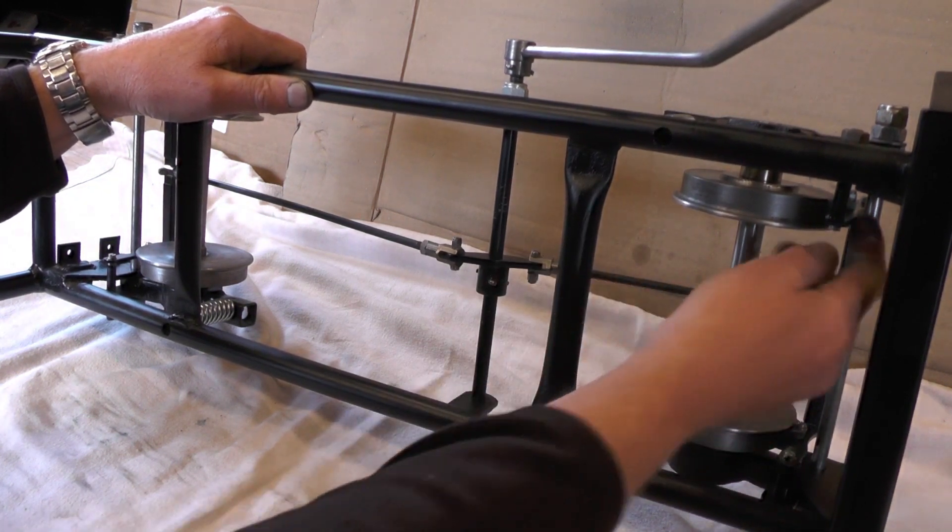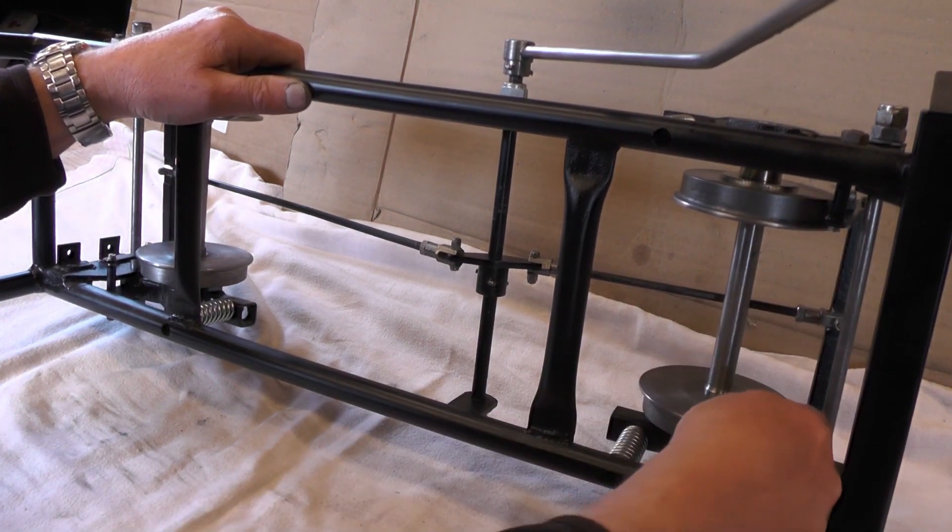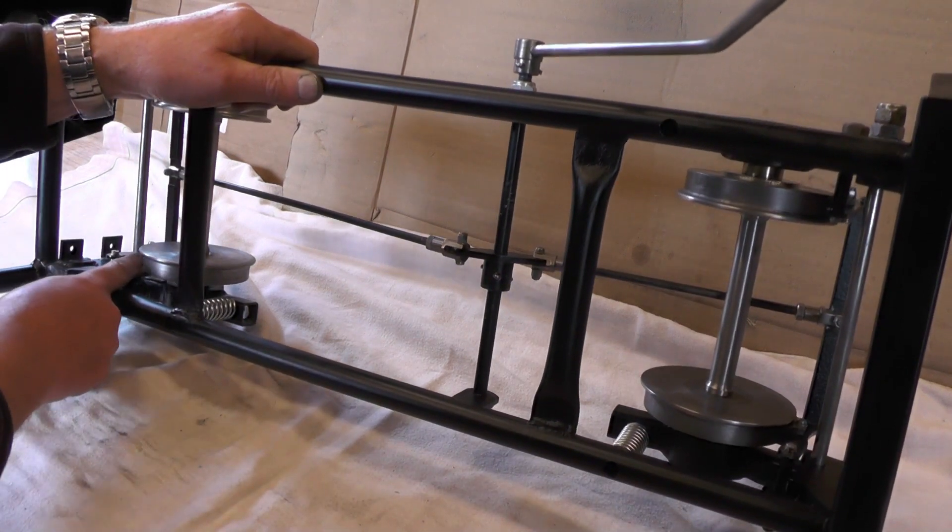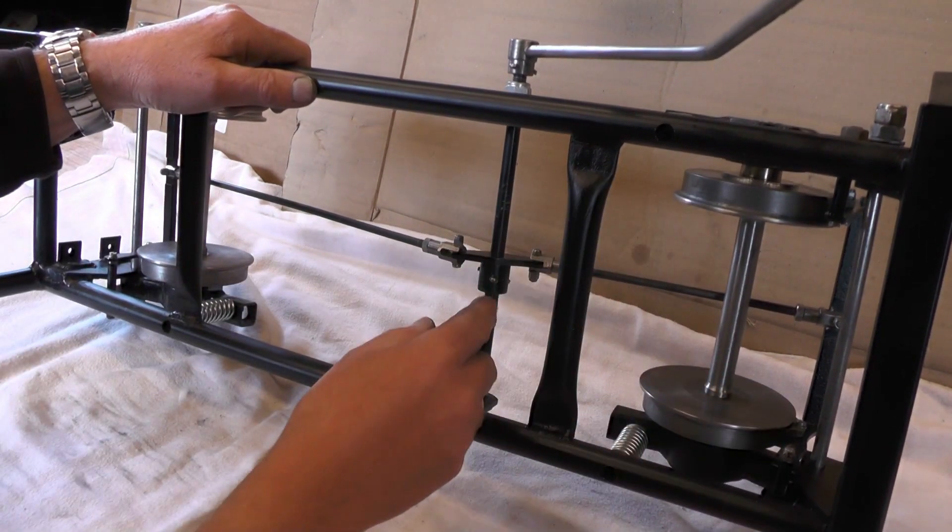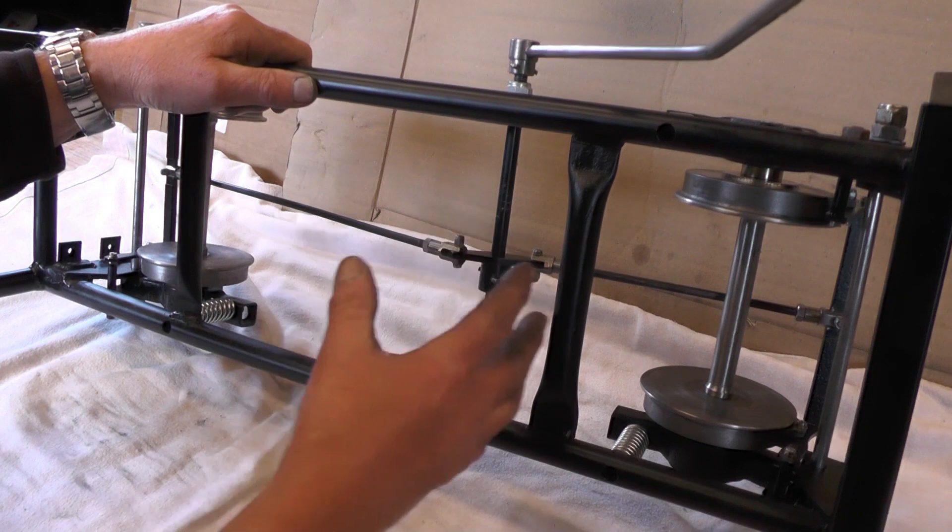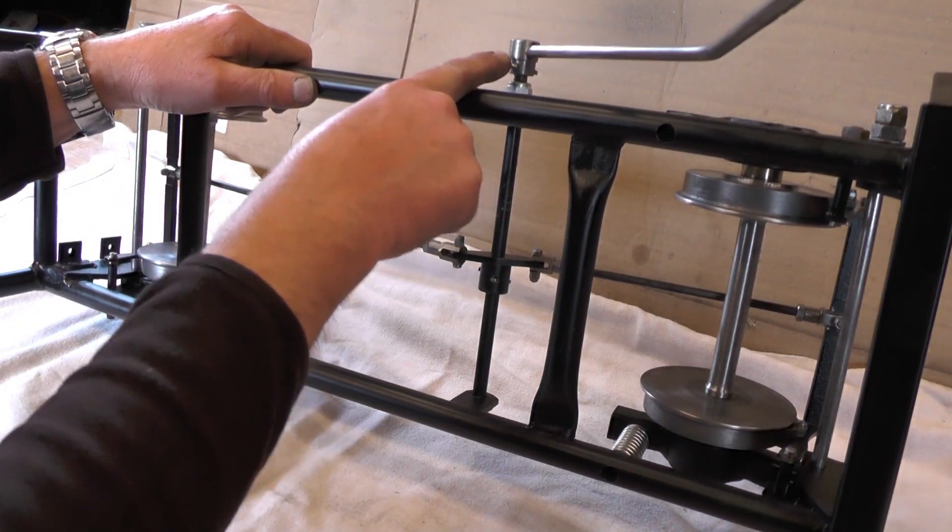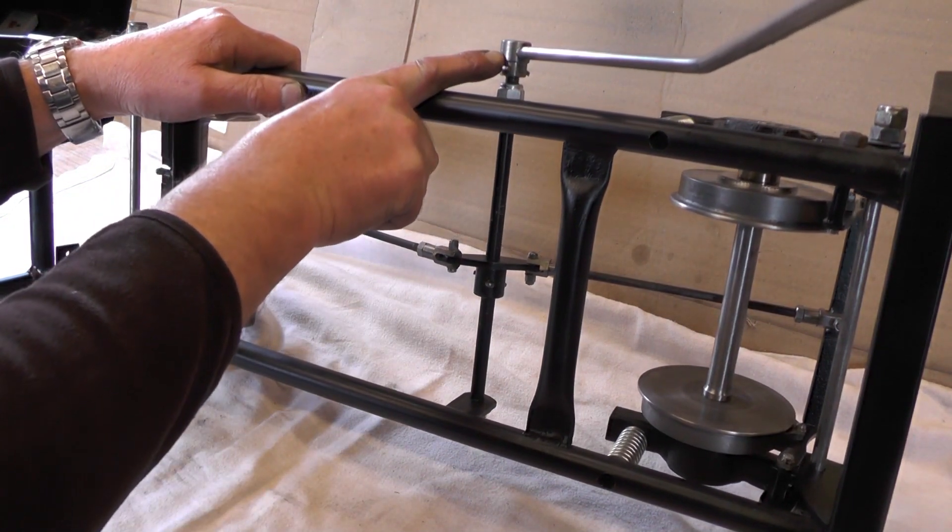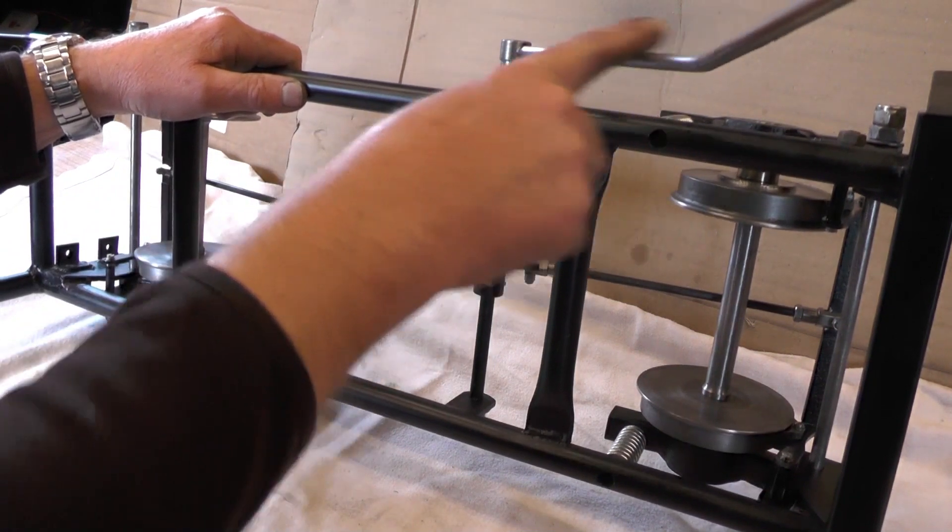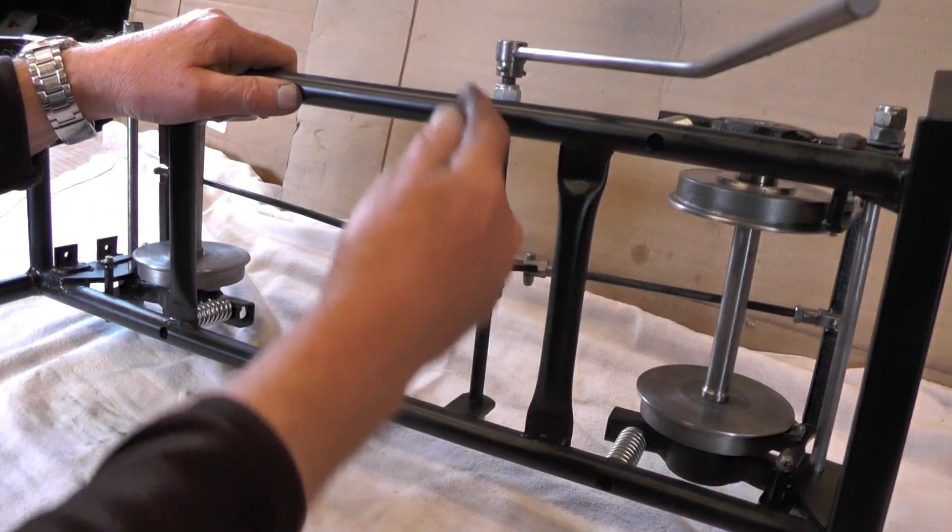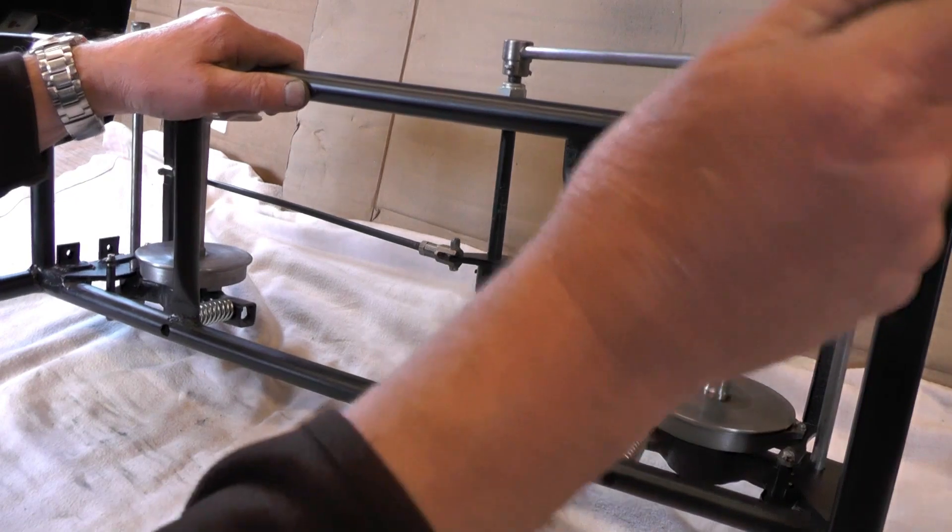Once you've got all your tie bars threaded, you can adjust them till your brake shoes are just catching. And then once all that's set, you can then drill this boss for the lever so that you drill it in an appropriate position so it's at the front.